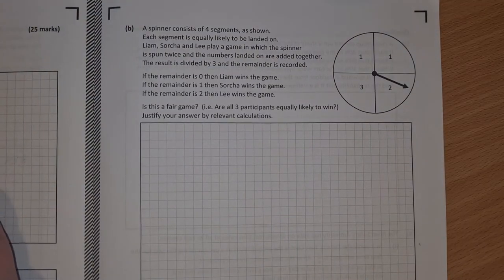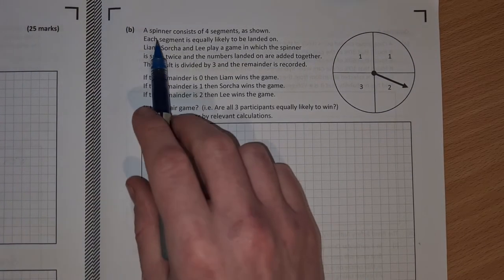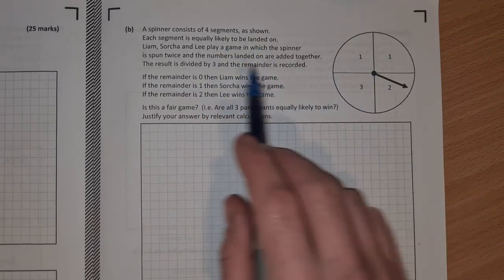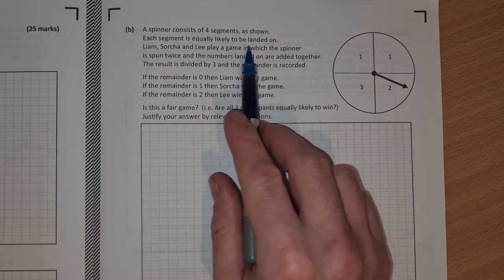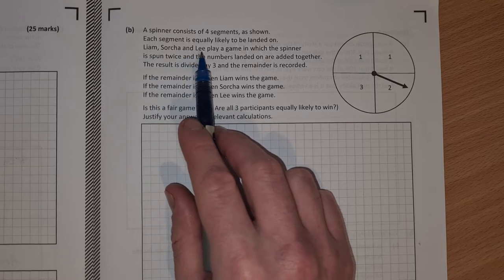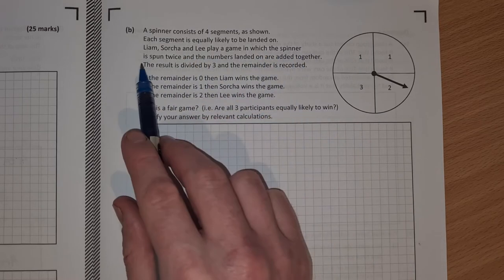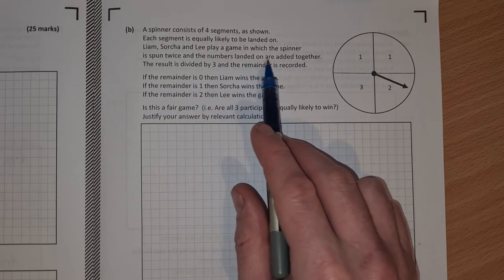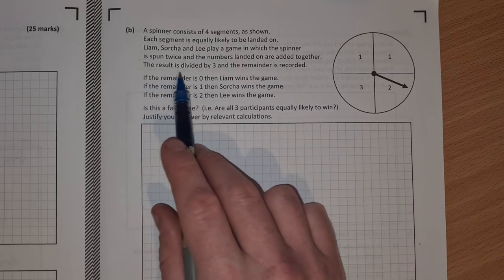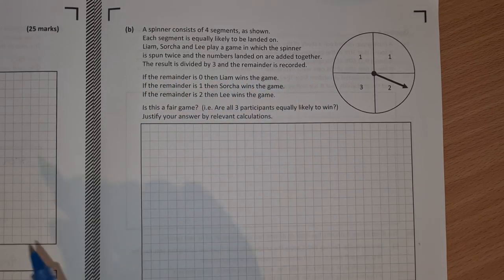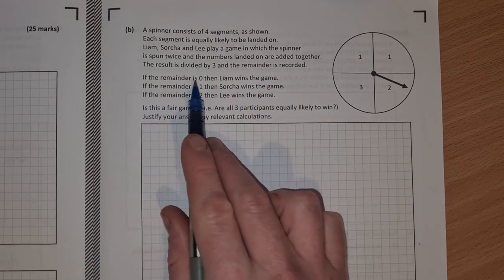So on to part B then. A spinner consists of four segments as shown. Each segment is equally likely to be landed on. Liam, Circa and Lee play a game in which the spinner is spun twice and the numbers landed on are added together.